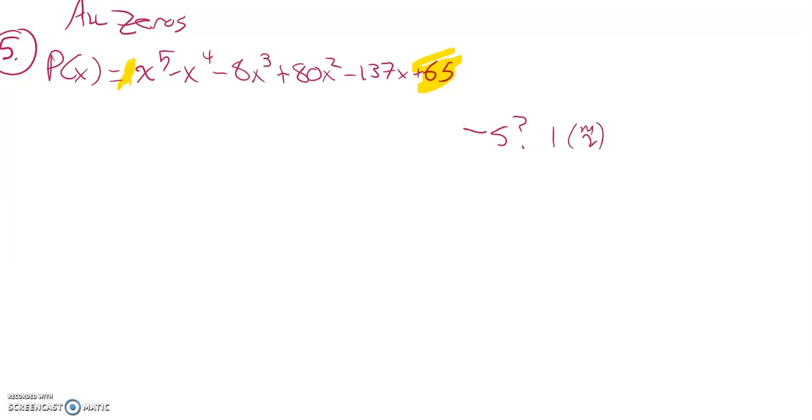So I think possibly negative 5 and maybe 1 with a multiplicity of 2. So let's try it. Let me try that negative 5 first. So I'm going to try and shove negative 5 into this thing. I have 1x^5, -1x^4, -8x^3, 80x^2, -137x, and then 65 ones. So let's do it.